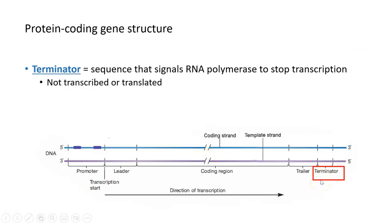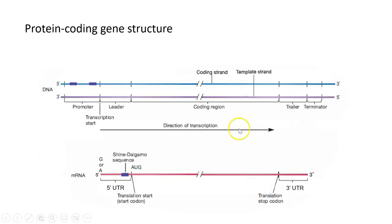The terminator is not transcribed or translated into protein — it's just like the opposite of the promoter region. The promoter region allows RNA polymerase to bind and is not made into RNA or protein, while the terminator region allows RNA polymerase to unbind and is also not made into RNA or protein. So at the DNA level, we have the promoter, the leader, the coding region, the trailer, and then the terminator in our protein coding gene.